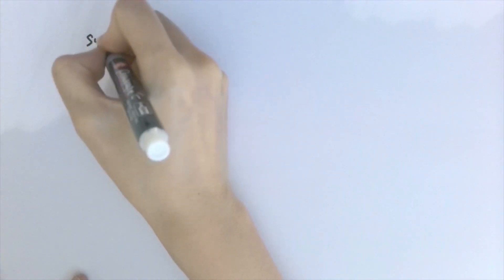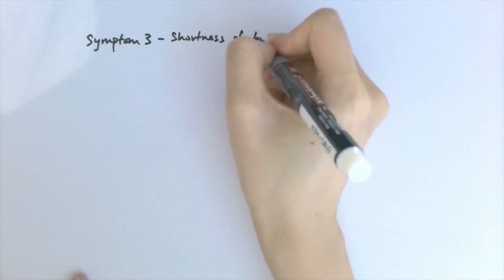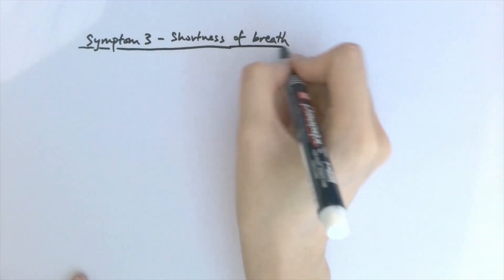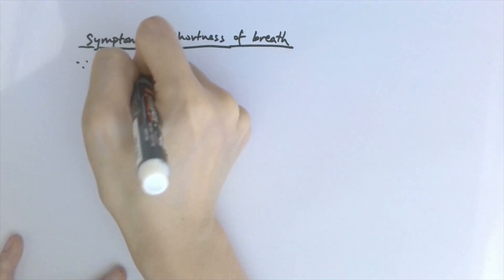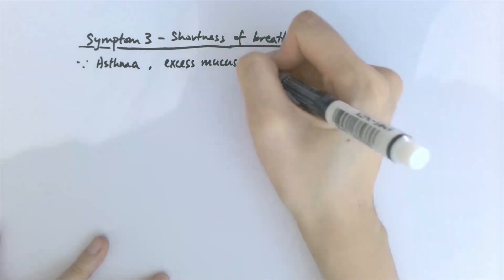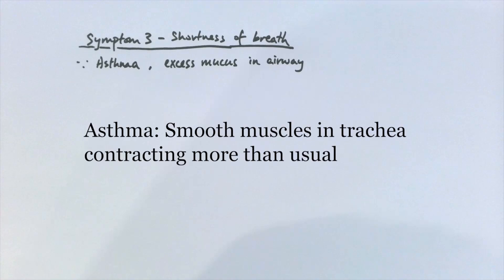Finally, the third symptom is shortness of breath. This can show up in the later stages of infection, and it's tricky to say if it's one thing or multiple things that trigger it. Shortness of breath is common for people with asthma and those who produce excess mucus due to restricted airflow in the trachea. For asthmatic patients, smooth muscles in the trachea contract more than usual, leading to a smaller lumen of the airway.